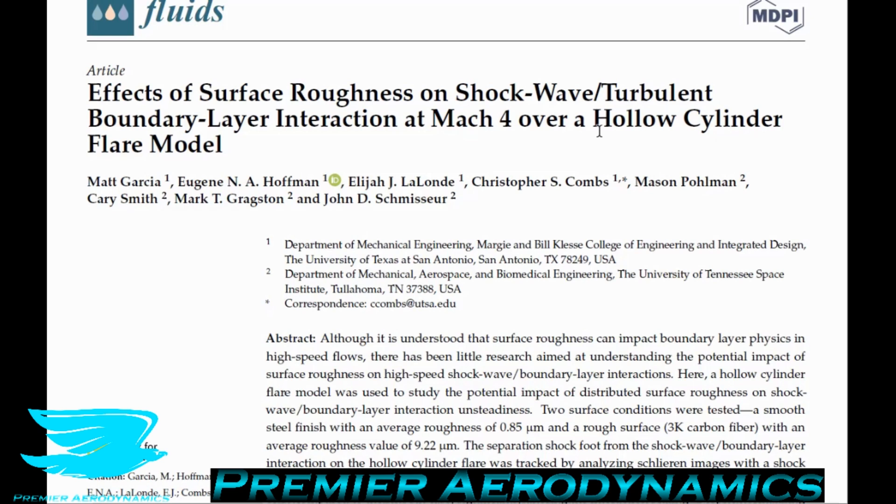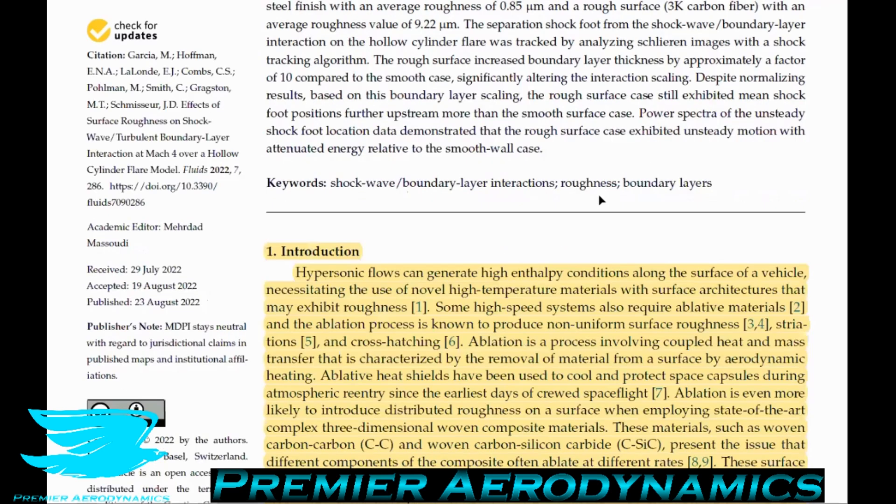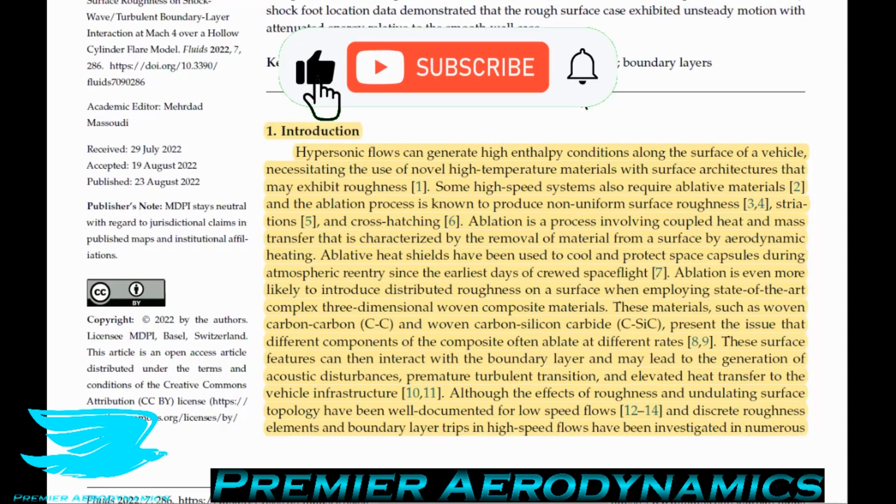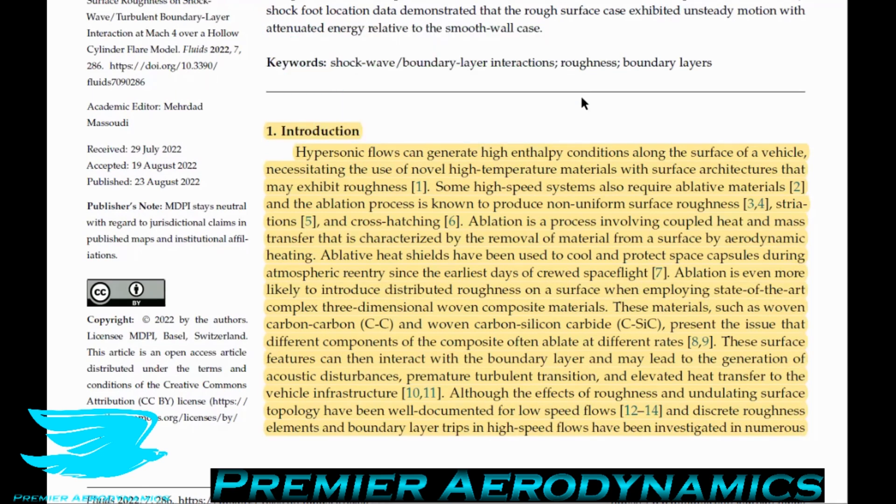The paper we're looking at is called Effects of Surface Roughness on Shockwave-Turbulent Boundary Layer Interaction at Mach 4 over a Hollow Cylinder Flare Model. This is open access, so you can find it in the link in the description. In the introduction, they say hypersonic flows can generate high enthalpy conditions along the surface of a vehicle. This is stating the use of novel high-temperature materials with surface architectures that may exhibit roughness. Some high-speed systems also require ablative materials, and that ablation process is known to produce non-uniform surface roughness, striations, and cross-hatching.